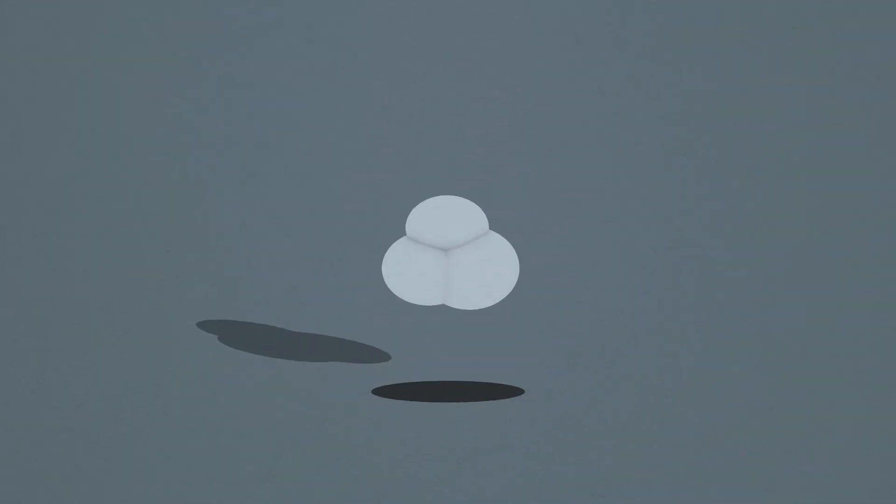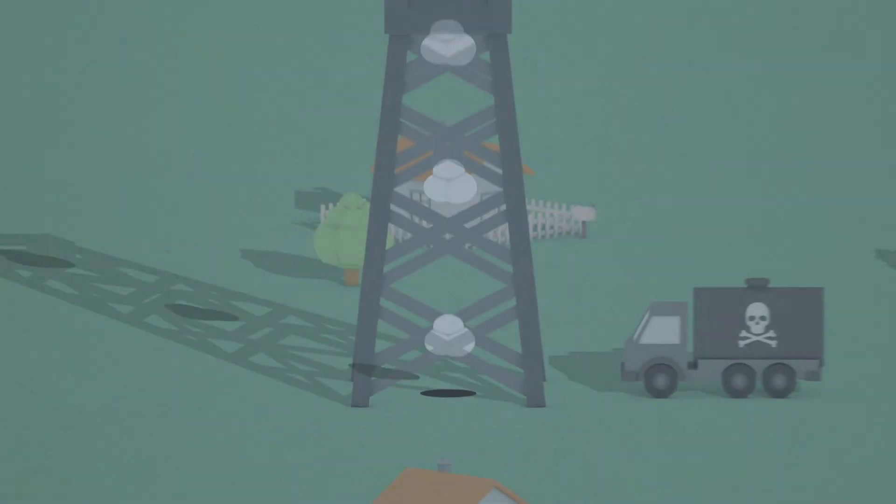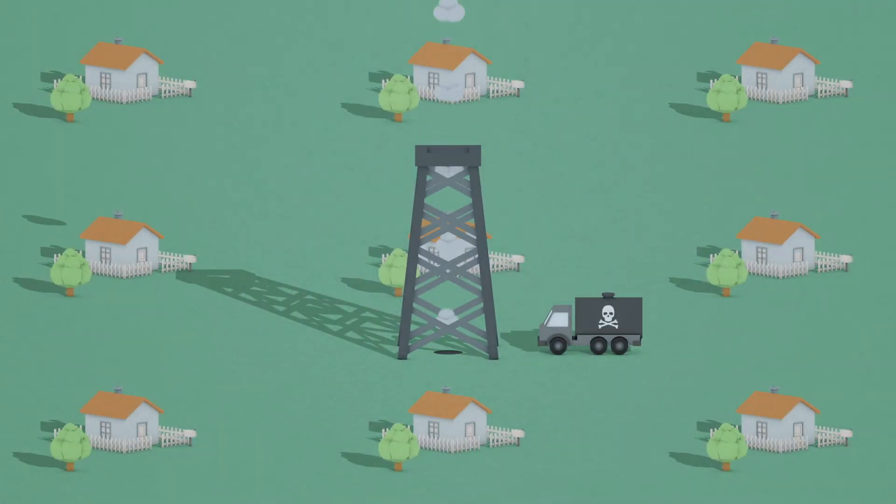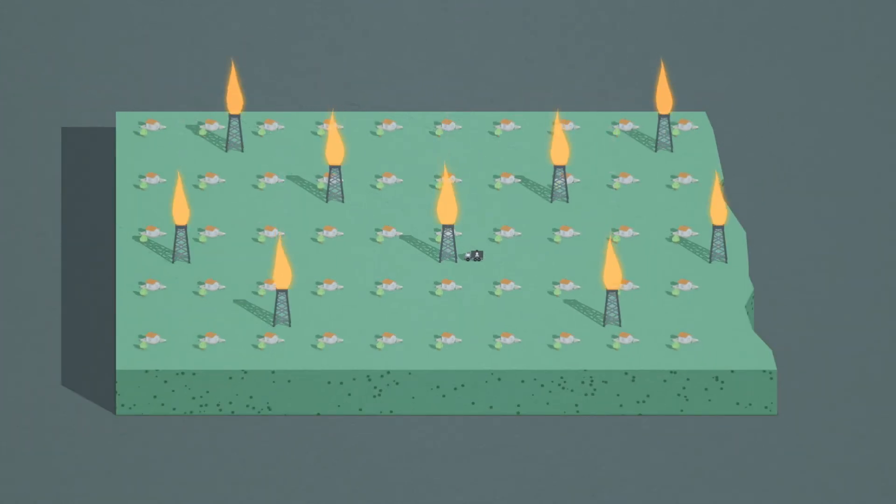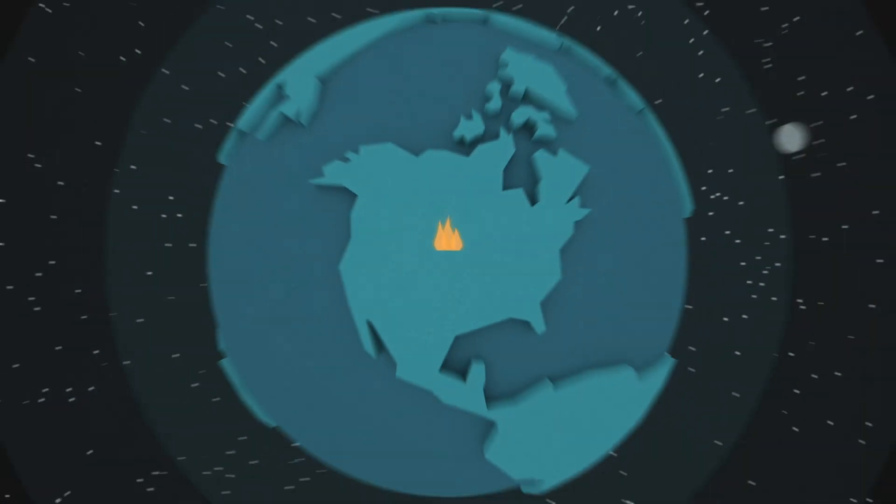The industry conceals the exact amount of methane that escapes during fracking. But in North Dakota, where fracking is done primarily for oil, the methane is released and burned off in such great amounts that it's visible from space.